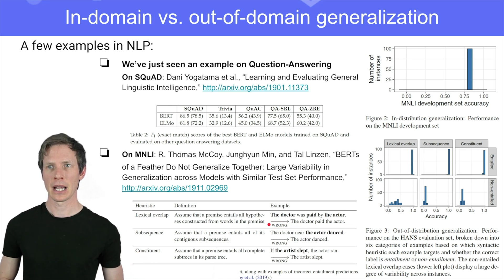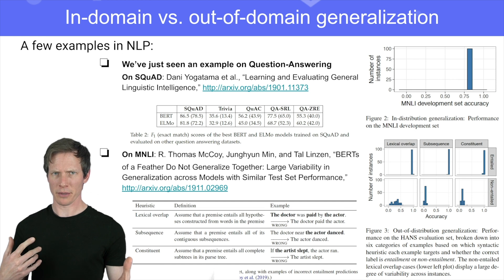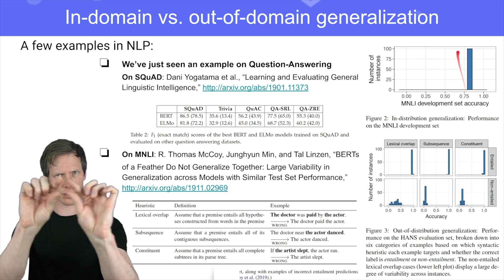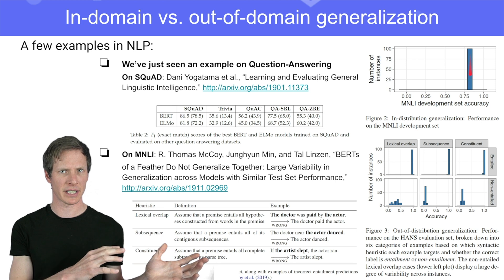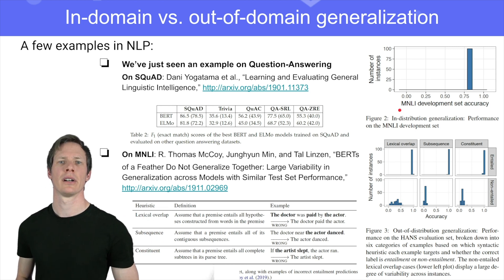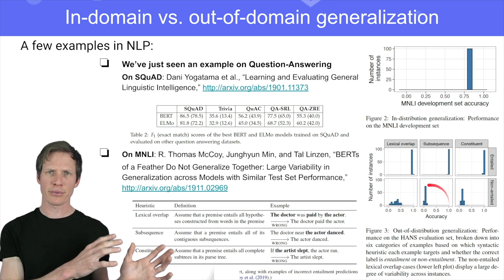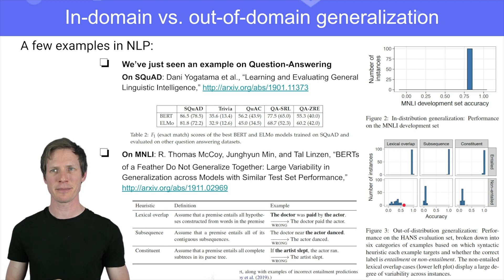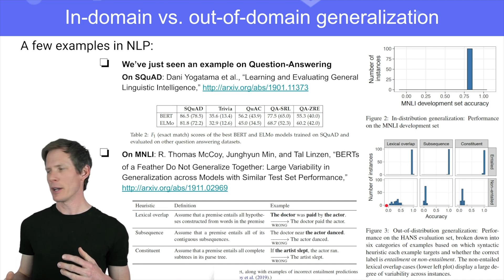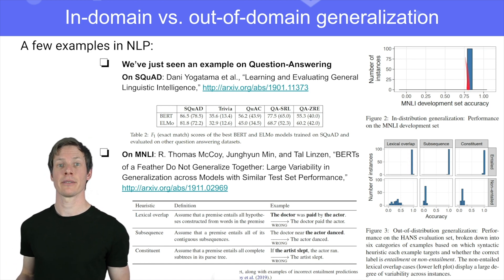Here is an example. What they show is that they can fine-tune several BERT models with different random seeds — the difference between them is very small, just the weight initialization of the last layer — and these models behave similarly on MNLI with very similar performances. But when you test them on the adversarial HANCE dataset, they behave really differently, with huge variability. Some are not so bad, and some are really bad. This means that in-domain test performance gives you no indication of how your model will behave in the real world.